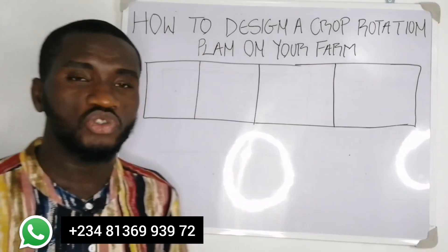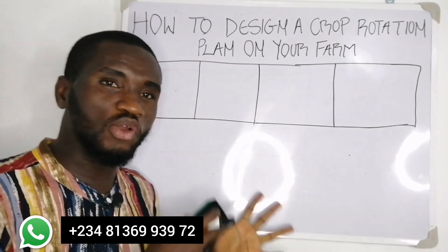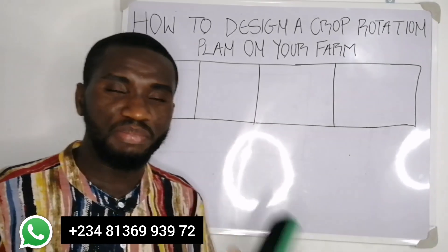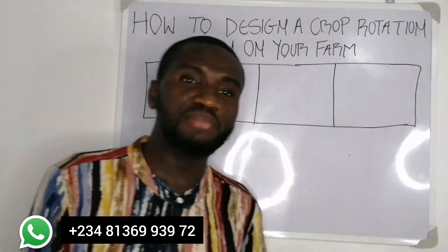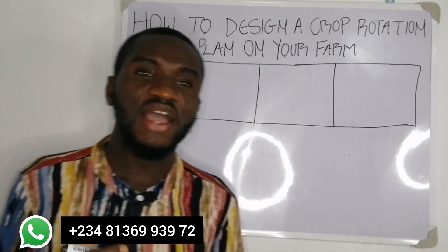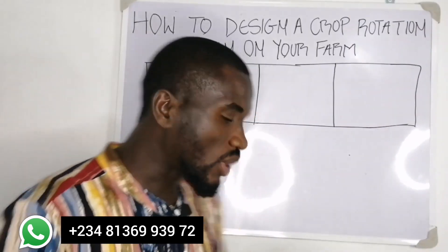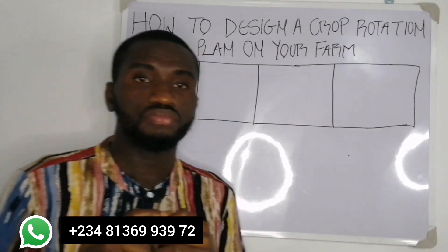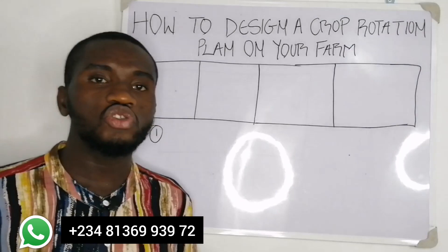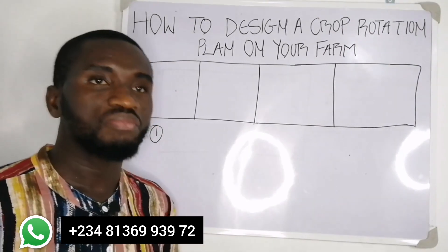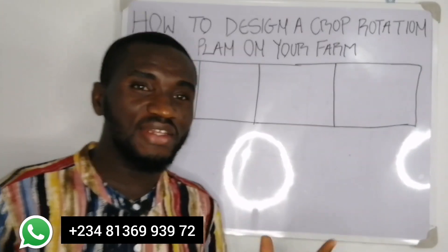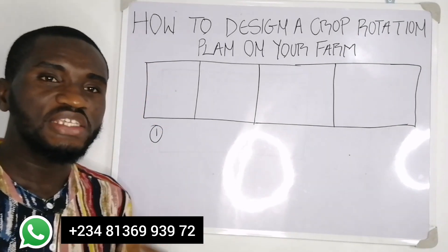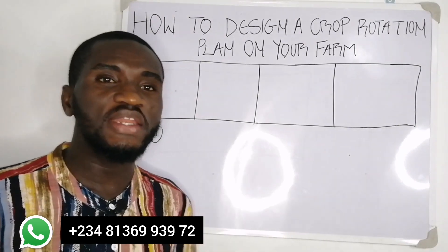Before I go to how you can design a crop rotation plan on your farm, I'd like to talk about the principles guiding this system. One of the basic principles is that we have different types and different families of crops. Two crops belonging to the same class or the same family must not follow each other. Another principle is that when you are doing your crop rotation plan, a shallow-rooted crop must follow a deep-rooted crop.